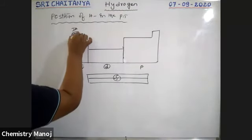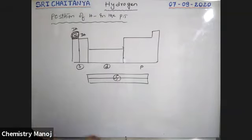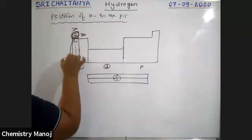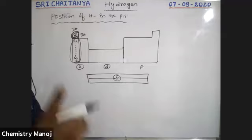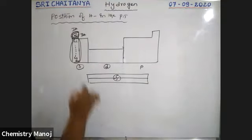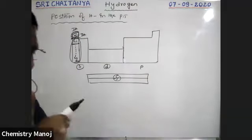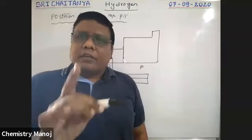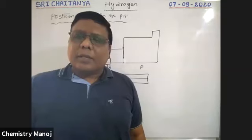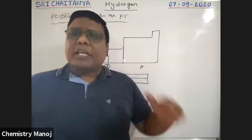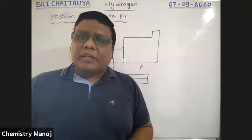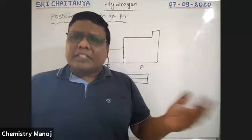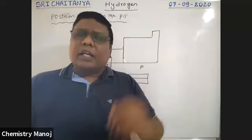Hydrogen is placed at the top of the first group in the periodic table, but it is not considered an alkali metal. Alkali metals are metals, but hydrogen is a non-metal. Because of this reason, hydrogen is not included in the alkali metals. Some properties of hydrogen resemble alkali metals, and some properties resemble halogens (17th group elements — fluorine, chlorine, bromine, iodine).